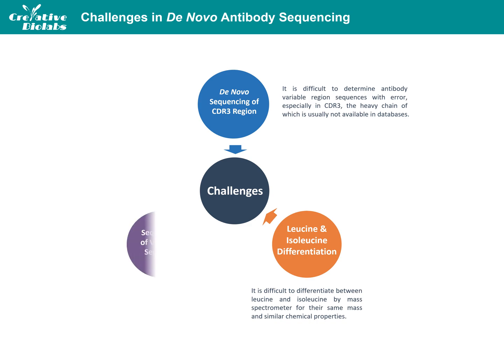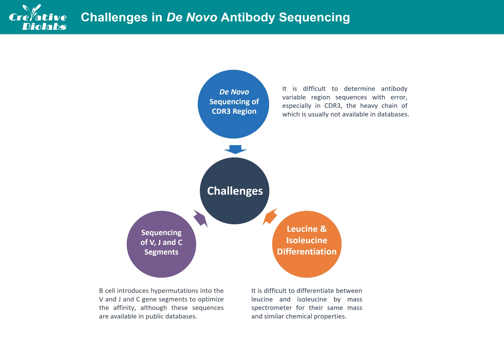The third challenge is the sequencing of V, J, and C segments. The V, J, and C gene segments of antibodies are available in public databases. However, during the maturation of the antibody, the B cell introduces hypermutations into the sequence to optimize the affinity.